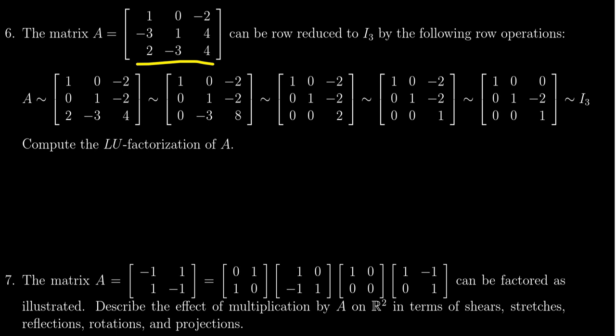We're given a 3x3 matrix A right here: 1, 0, negative 2, negative 3, 1, 4, 2, negative 3, 4.